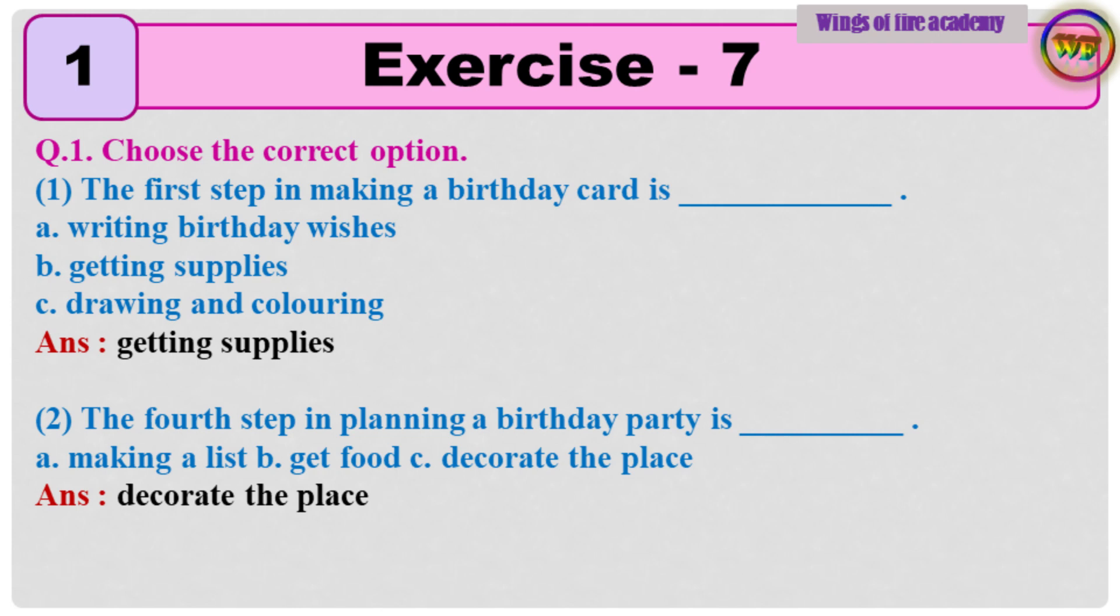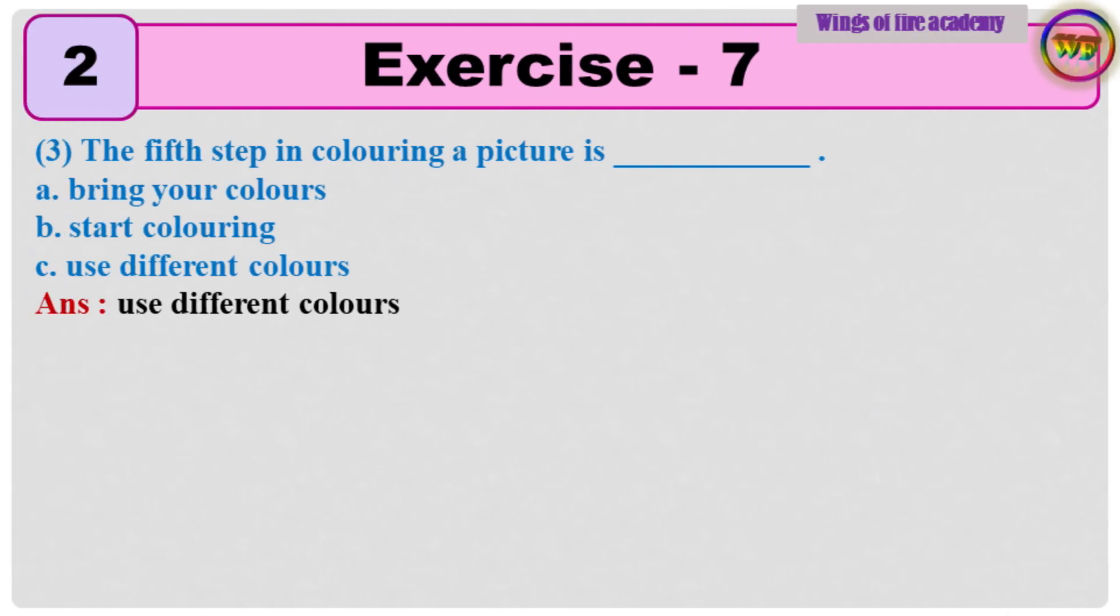Question 1. Choose the correct option. Question 1. The first step in making a birthday card is dash dash. Answer. Getting supplies. 2. The fourth step in planning a birthday party is dash dash. Answer. Decorate the place. 3. The fifth step in coloring a picture is dash dash. Answer. Use different colors.